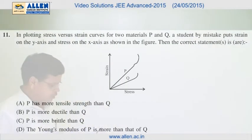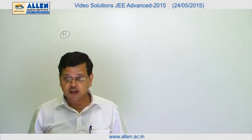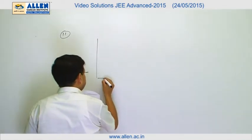Paper 2, question number 11. In this question, a graph between strain and stress has been provided to us, and we have to comment about which material has more tensile strength, which is more ductile, which is more brittle, and which has more Young's modulus compared to the other. Tensile strength of a material is the maximum tensile stress it can take before breaking.